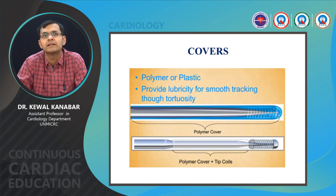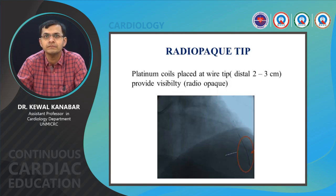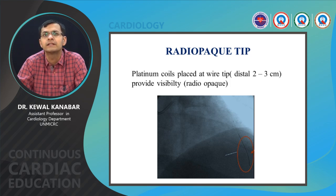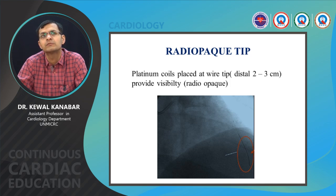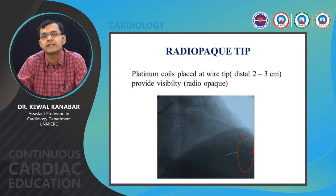The cover on the tip may be a polymer coating or a plastic coating. The cover on the core provides lubricity so we can easily track through the vessel and through tortuous lesions — either a polymer cover or a polymer cover with tip coils. The distal tip of the guide wire always has a radiopaque marking; most workhorse wires have 30 mm of radiopaque marking. Some wires like the Fielder XT series have a much longer radiopaque tip exceeding 15 centimeters.